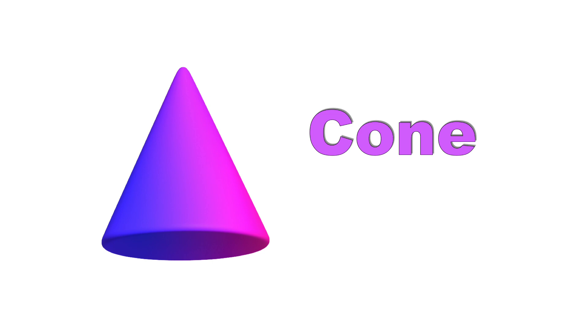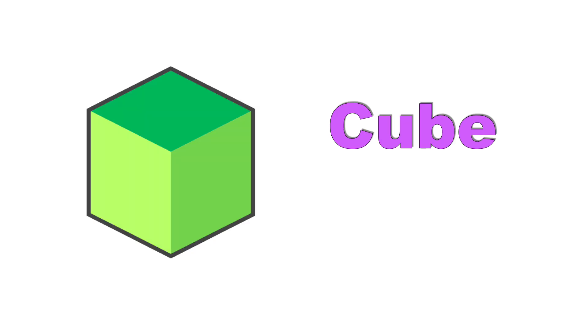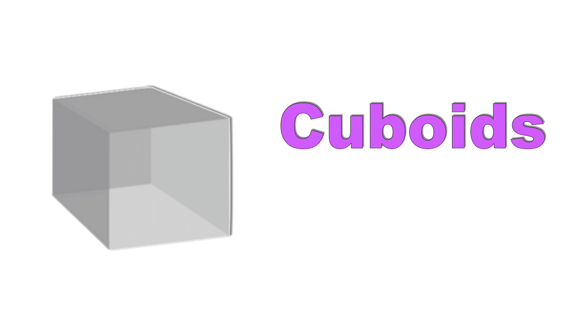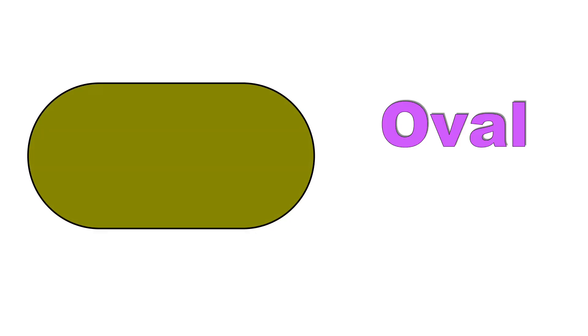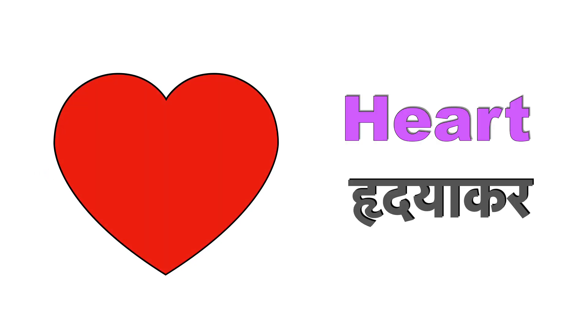Cone means Shanku. Cylinder means Belnaakar. Cube means Ghan. Cuboid means Ghanab. Oval means Andakar. Heart means Haridyaakar.